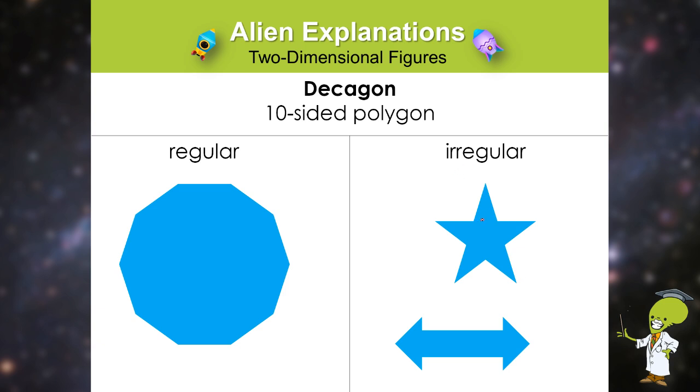Now I want to show you this. If you look at this star, you may be thinking, oh look, all of the sides are the same length. Why is the star not a regular polygon?